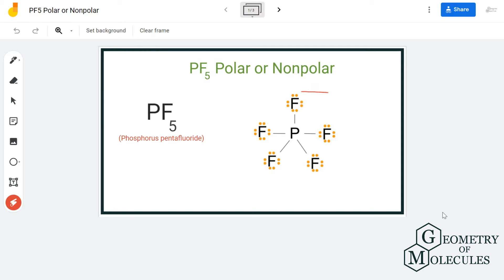Here is the Lewis structure for PF5, in which the phosphorus atom takes a central position and all the fluorine atoms are arranged around it. Even if there is a dipole moment, there are chances that it will get nullified because of the symmetric distribution of the atoms.